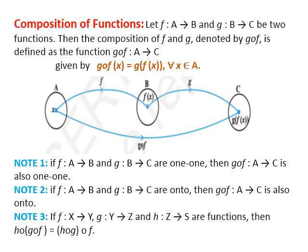Remember the definition of onto function from the previous video. The third point is that if f from X to Y, g from Y to Z, and h from Z to S are functions, then h∘(g∘f) equals (h∘g)∘f. This simply follows the associative rule — if we have three functions, then the composition follows the associative property. If you've understood, pause the video and note down the definition and these points.